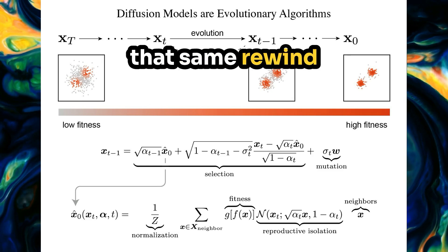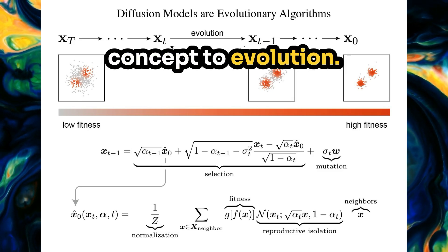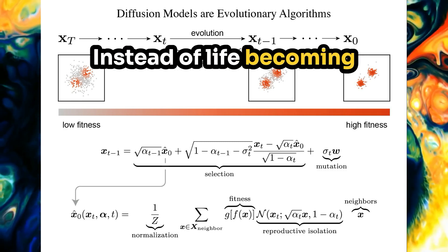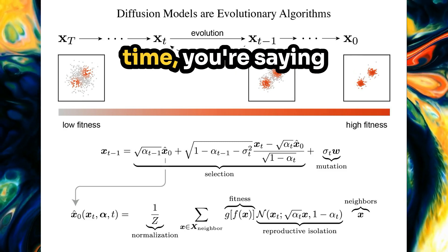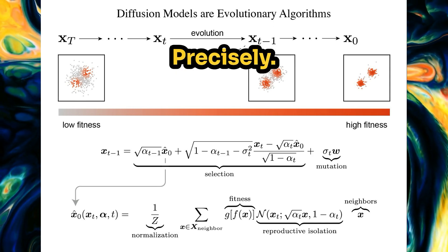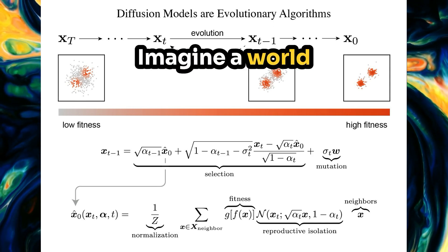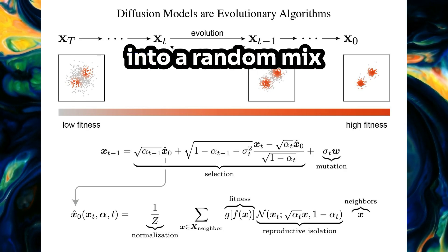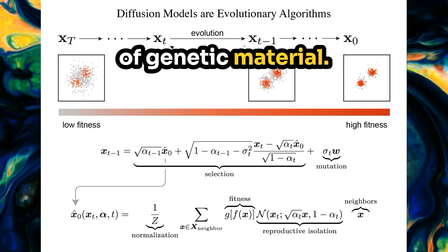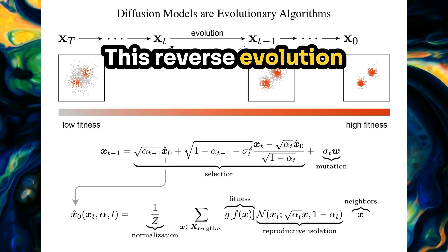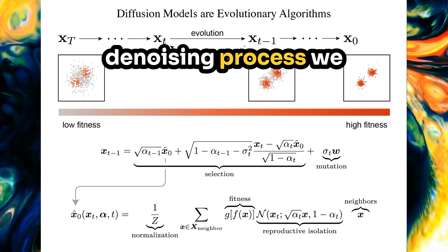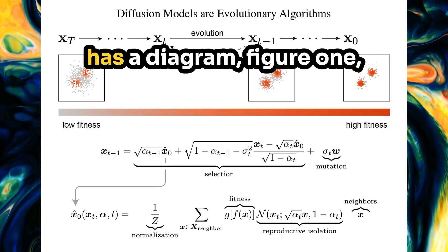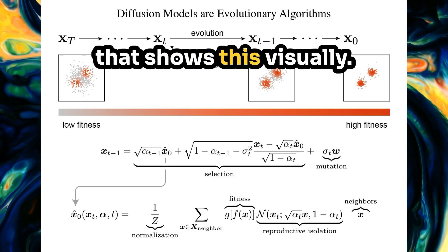Now imagine applying that same rewind concept to evolution. What if we could run evolution backward? Instead of life becoming more complex over time, it becomes simpler. Imagine a world where diverse species slowly dissolve back into a random mix of genetic material. This reverse evolution would look a lot like the denoising process we see in diffusion models. The paper even has a diagram — Figure 1 — that shows this visually.